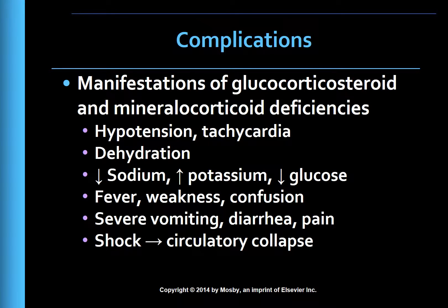During acute adrenal insufficiency, severe manifestations of glucocorticoid and mineralocorticoid deficiencies are exhibited, including hypotension (particularly postural), tachycardia, dehydration, hyponatremia, hyperkalemia, hypoglycemia, fever, weakness, and confusion. GI manifestations include severe vomiting, diarrhea, and abdominal pain. Pain may occur in the lower back or legs. Hypotension may lead to shock, and circulatory collapse associated with adrenal insufficiency is often unresponsive to the usual treatment of vasopressors and fluid replacement.